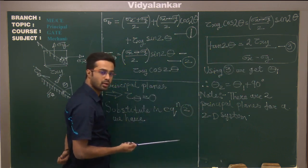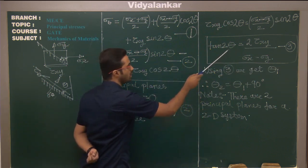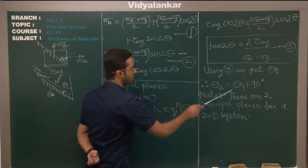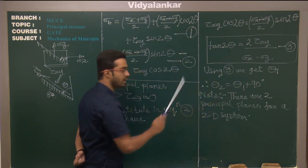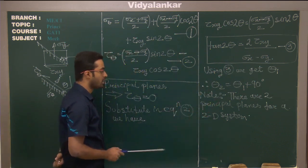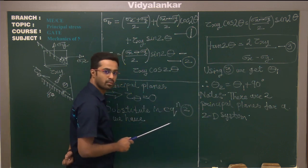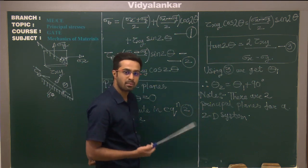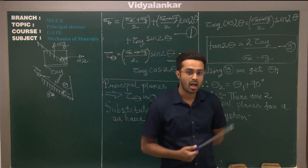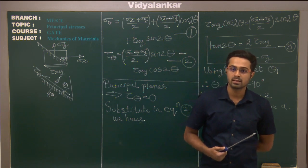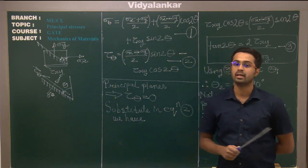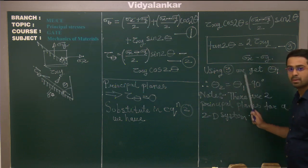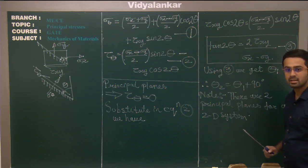If I want to evaluate theta two, it is simple — whatever you get from this equation plus 90 degrees gives you theta two. The learning from this equation is: there are two principal planes for a 2D system, three principal planes for a 3D system, and principal planes are separated by 90 degrees. Principal planes are always 90 degrees apart.